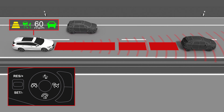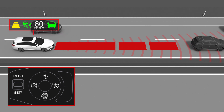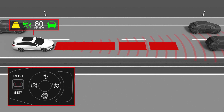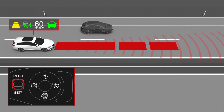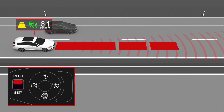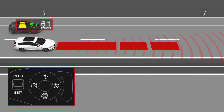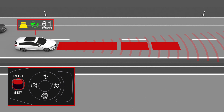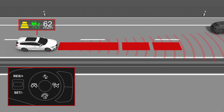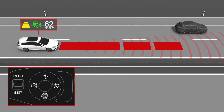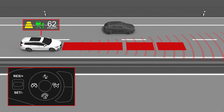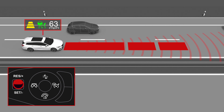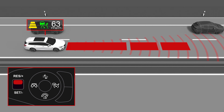The set cruising speed can be adjusted with the thumb wheel on the steering wheel. Move the thumb wheel up repeatedly to increase the speed in small steps. Move and hold it for larger steps.